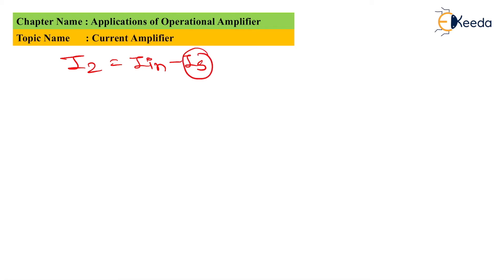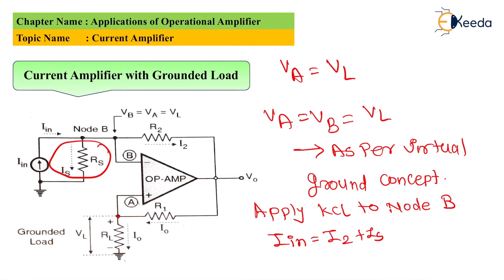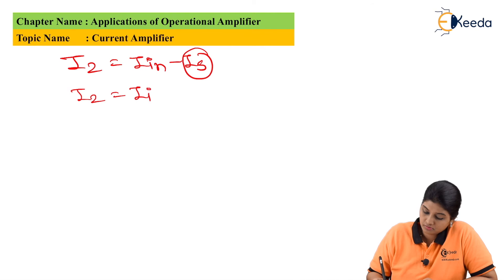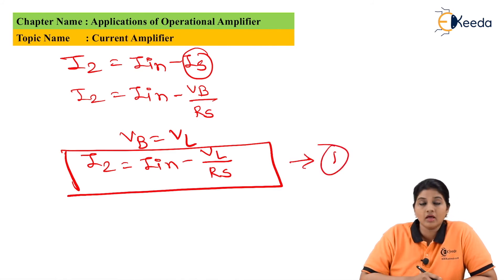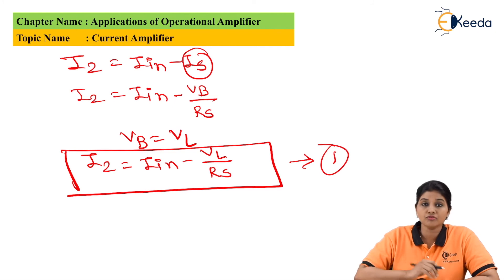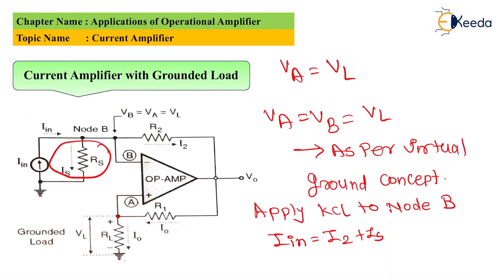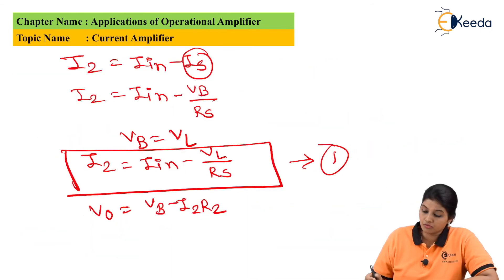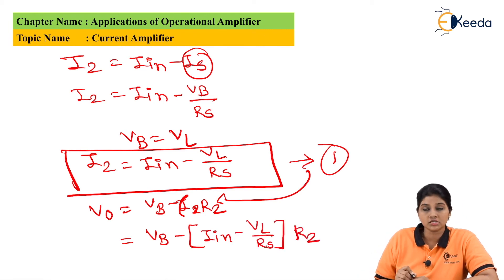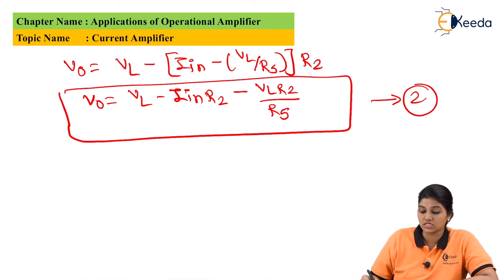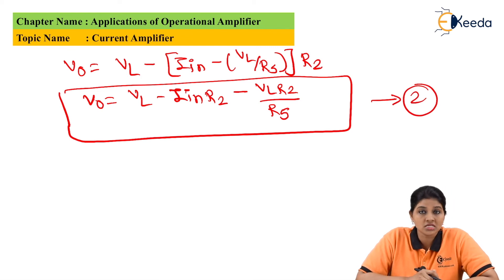Now let's concentrate on the term i_s, which is the current flowing through Rs, so i_s = VL/Rs, since VB = VL. Substituting this, the value of i2 = i_in - VL/Rs — let's call this equation one. The output voltage of the op-amp is given by Vo = VB - i2·R2. Substituting equation one and VB = VL, we obtain the output voltage equation as Vo = VL - i_in·R2 + (R2/Rs)·VL. We consider this equation number two.